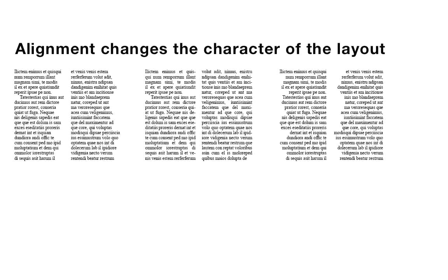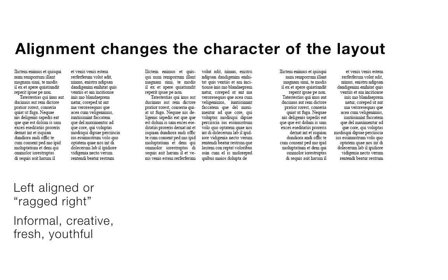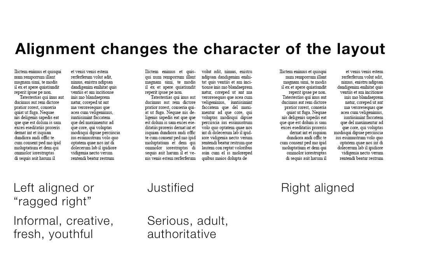Another thing that gives a different character to a layout is the alignment. On the left we have left aligned, or ragged right, where the right-hand side of the column is a ragged line — this has an informal or creative feel. The one in the middle is justified, so the right-hand side is a vertical line, giving a more serious, authoritative style, though it could also look boring. The one on the right is right aligned, where the left-hand side is ragged. That can look good for captions or headings, but it's very difficult to read large amounts of copy set right aligned, because it's hard for the eye to find the starts of the lines.